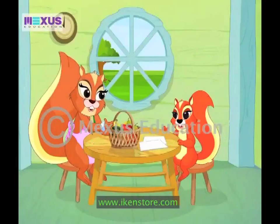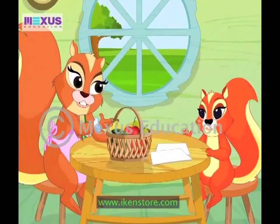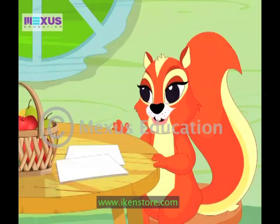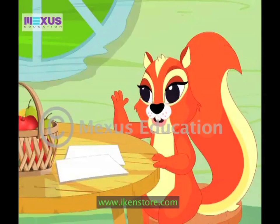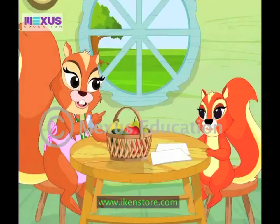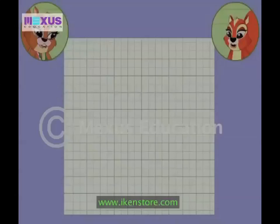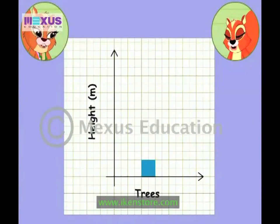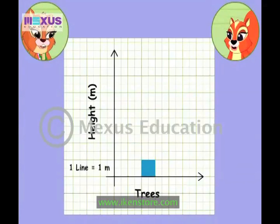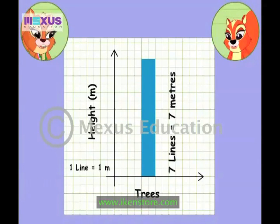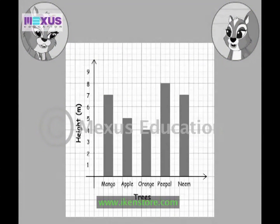Now all we need to do is draw a bar graph showing these heights. Oh, but I cannot draw a 7 meter tree on paper — my notebook is too small for it. Yes, that's right. But what you can do is assume that every line on your notebook represents 1 meter. So 7 meters will be shown as 7 lines. Come, let's draw the graph. Here's a bar graph of the heights of the trees, and each line shows 1 meter.